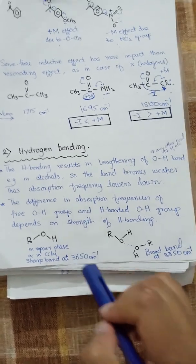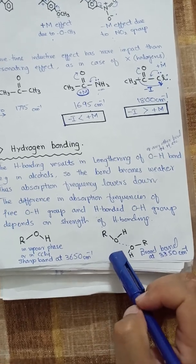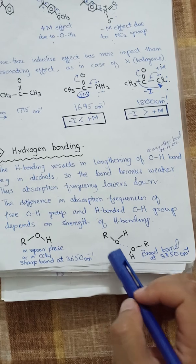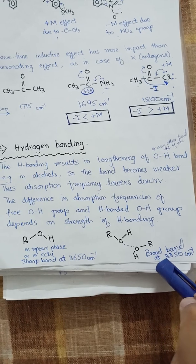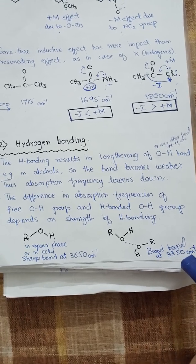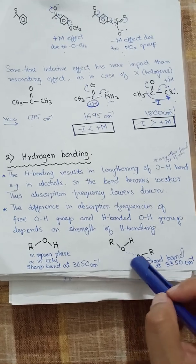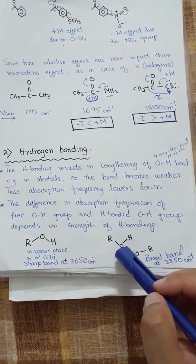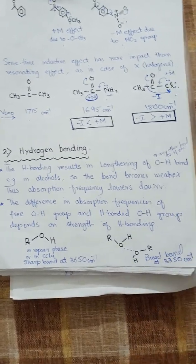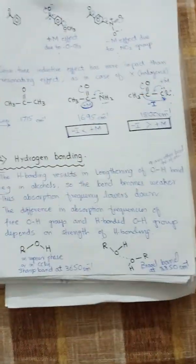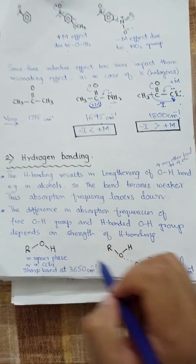In the case of alcohol in liquid form or in aqueous medium, a broad band is observed at 3350 cm⁻¹. The absorption frequency is lowered due to hydrogen bonding, which decreases the O-H bond character and thus lowers the absorption frequency.